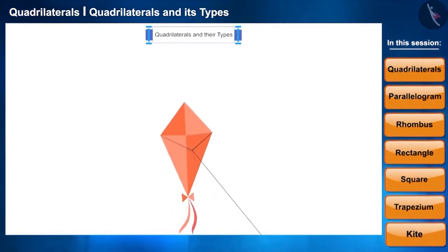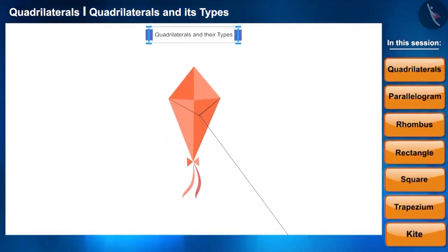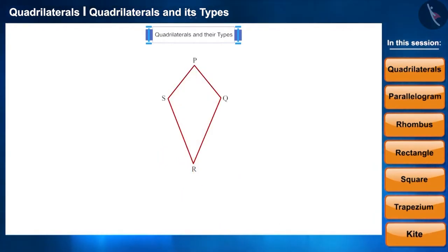Friends, you must have seen the kite. It looks like this. Its sides are not parallel. There are two pairs of adjacent sides whose lengths are equal. Such quadrilaterals are called kite. Its one diagonal bisects the other diagonal at right angle.